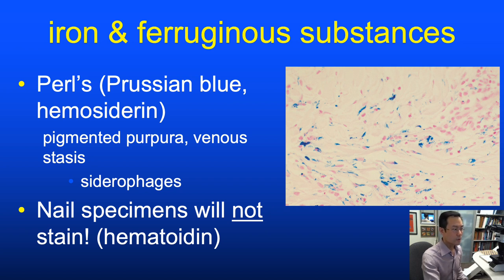A word of caution for attempts to confirm hemorrhage in nail specimens: the Perls stain will not work in the anaerobic environment of the nail. The pigment form in nails is called hematoidin, and the Perls stain will not work. There is a benzidine stain that can identify hemoglobin, but the chemicals involved are toxic and it is not widely available.